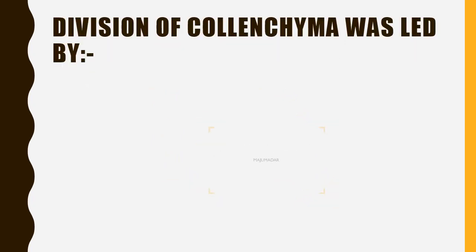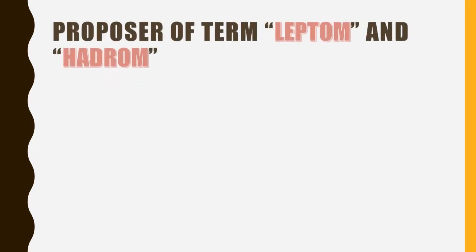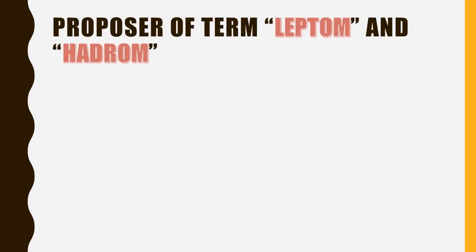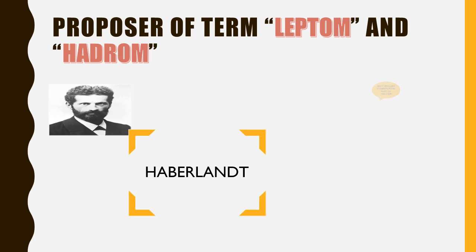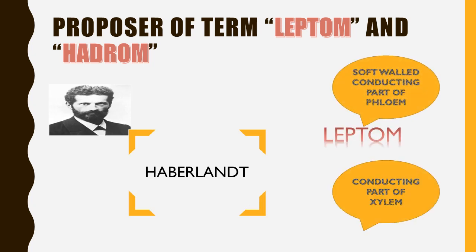Here is a factual history of the honorable scientist Majumadar, who divided calyptragen into three parts, which we'll discuss in permanent tissues. The great grand proposer of terms like leptom and hadrom — please pay reverence before Haberland. Leptom simply means the soft-walled conducting part of phloem; hadrom means the conducting part of xylem.